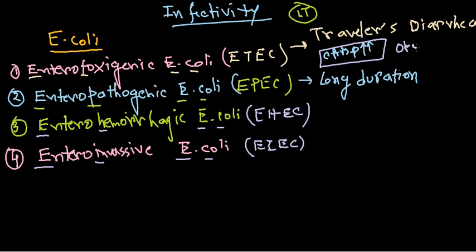In both cases, transmission occurs via fecal-oral route — the bacteria are usually transferred via contaminated water or food sources. EPEC is persistent for a longer period and affects newborns and infants. These infections are mostly seen in developing countries like India and parts of Africa. The third type is EHEC — enterohemorrhagic E. coli — which is quite dangerous.